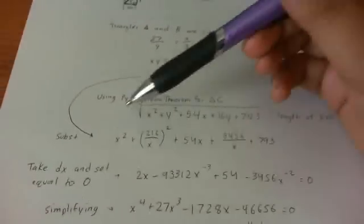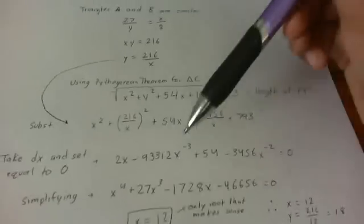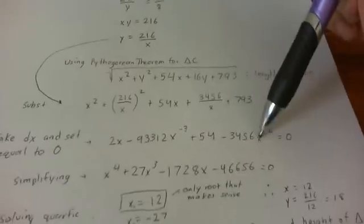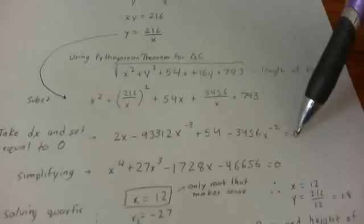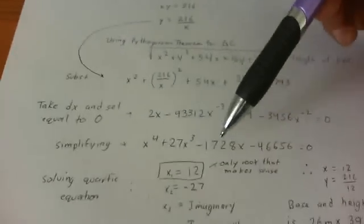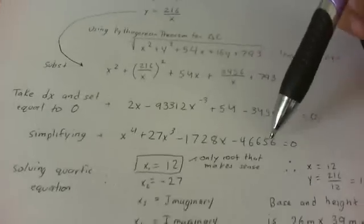So the derivative of this expression right here is 2X minus 93,312 X to the negative 3 power plus 54 minus 3456 X to the negative 2 power and I'm setting that equal to zero. And I simplified that and I got the following: X to the fourth plus 27X cubed minus 1728X minus 46656 equals zero.